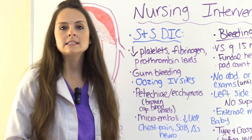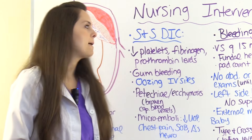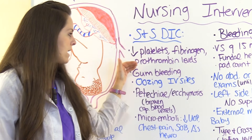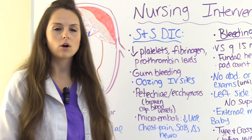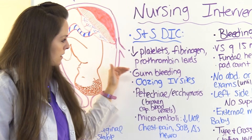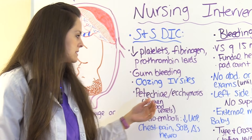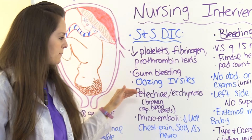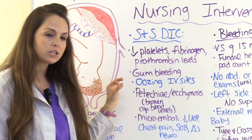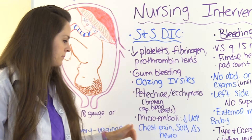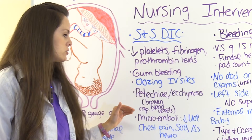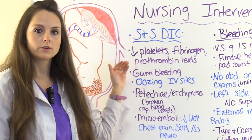For nursing interventions, monitor the patient for DIC by checking labs: are platelets decreasing? Is fibrinogen decreasing? Are prothrombin levels decreasing? Also assess for bleeding gums, oozing around IV and injection sites, petechiae — which are small purplish areas from broken capillary blood vessels — and ecchymosis. Monitor for microemboli by assessing urinary output, chest pain, shortness of breath, and changes in mental status.